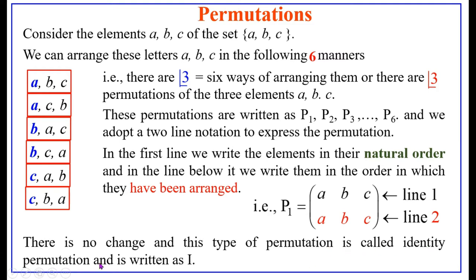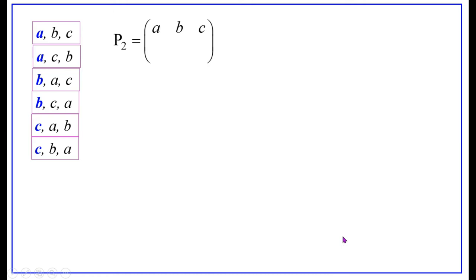In p1, there is no change: the first line is a b c and the second line is also a b c. The image of a is a, the image of b is b, the image of c is c. That is, a goes to a, b goes to b, c goes to c. This type of permutation is called the identity permutation and is written as i.